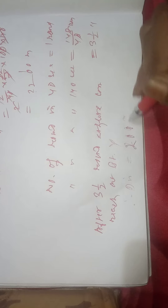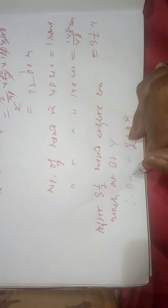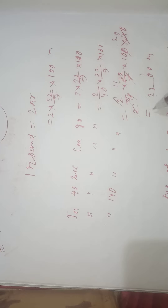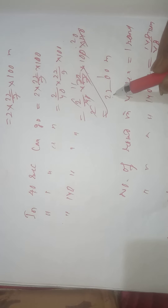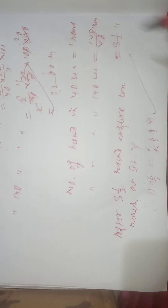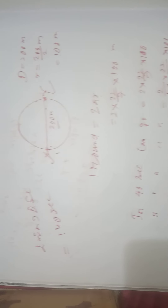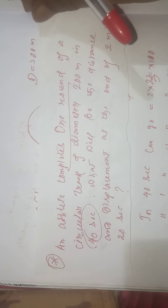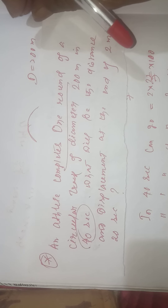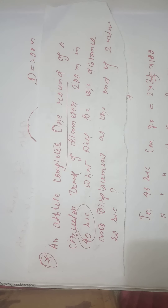So to summarize: the distance is 2200 meters and the displacement is 200 meters. This is a very important question. You should try to solve it by yourself two or three more times. This question is similar to the one about the square field we solved earlier — both involve finding distance and displacement for a closed-path problem.